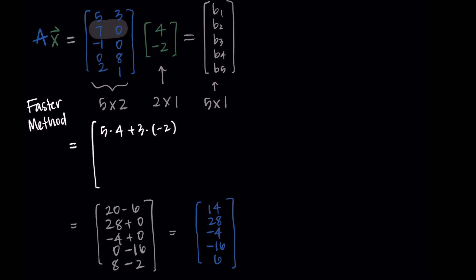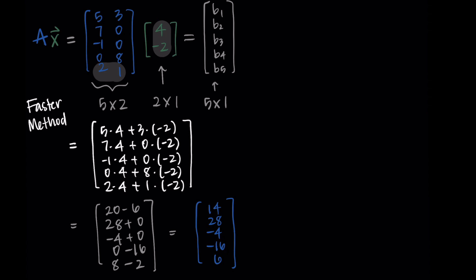Then we do the next row. I do 7 times 4 plus 0 times negative 2. Then I do negative 1 times 4 plus 0 times negative 2. So I'm just moving down row by row. I do 0 times 4 plus 8 times negative 2. And then I do 2 times 4 plus 1 times negative 2. And with some color coding we can see how this works out.